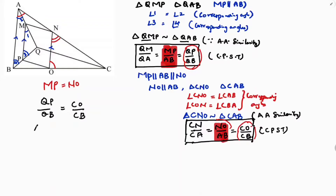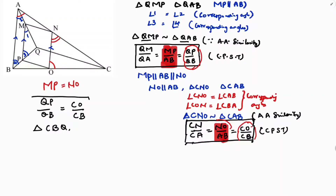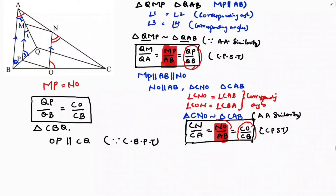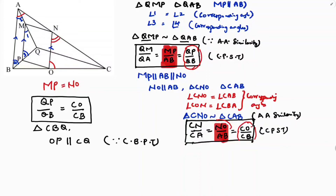Observing these sides — QP/QB and CO/CB — these are sides of triangle CBQ, and the sides are proportional. Therefore, by the converse of the Basic Proportionality Theorem (BPT), OP is parallel to CQ. Because QP/QB equals CO/CB means the line divides two sides proportionally, so by converse of BPT, OP is parallel to CQ.